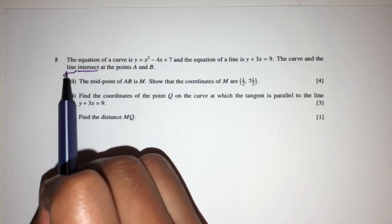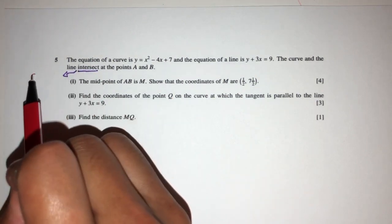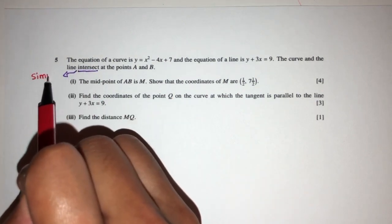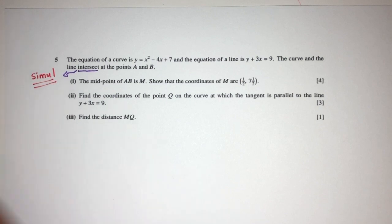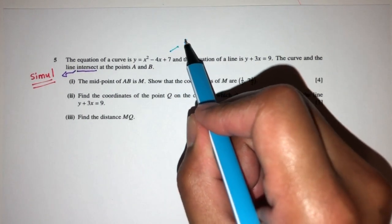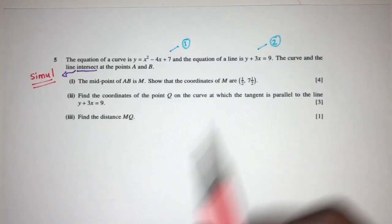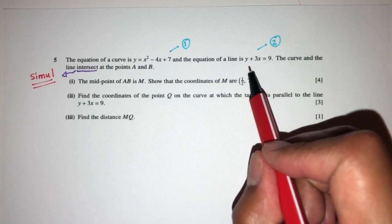Now intersect means they meet or cut or join each other. We understand that whenever we see intersection, we will have to solve a simultaneous equation. Equation number one is given by the curve, equation number two is given by the line.